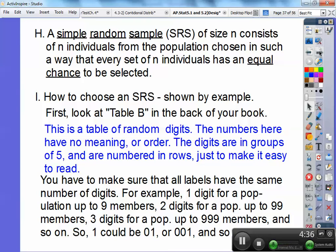And you have to make sure that all labels, so I want you to write this down, all labels have the same number of digits. So, for example, one digit for a population would be up to nine members. Two digits for populations would be up to 99 members, and three digits for populations up to 999 members. So, four digits would be up to populations of 9,999 and so on. So, one could be 01 or 001 or 0001 and so on. I don't know if you can see that and so on.